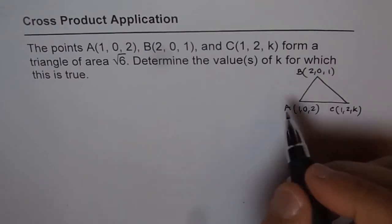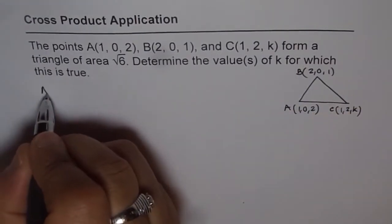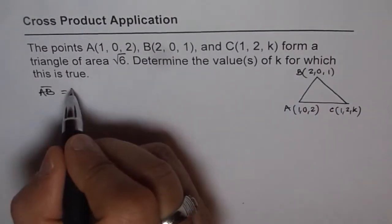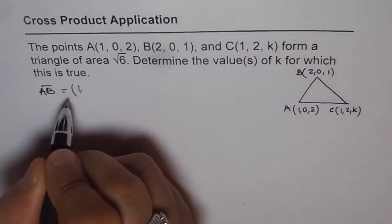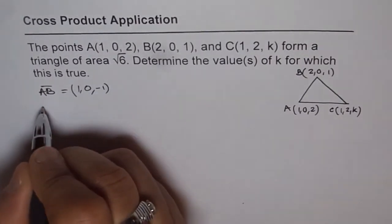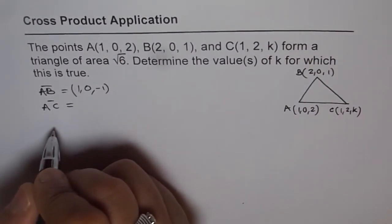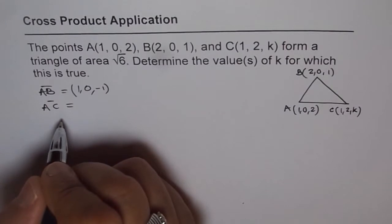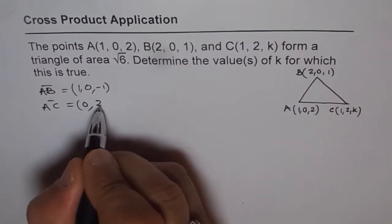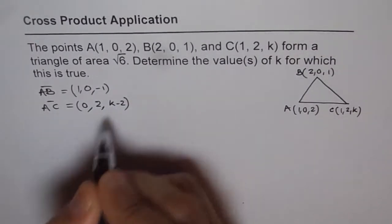Now we need to find what the sides are. AB equals 2 minus 1, which is 1; 0 minus 0 is 0; 1 minus 2 is -1. So AB = (1, 0, -1). Similarly, AC will be: 1 minus 1 is 0, 2 minus 0 is 2, and k minus 2. So AC = (0, 2, k-2).